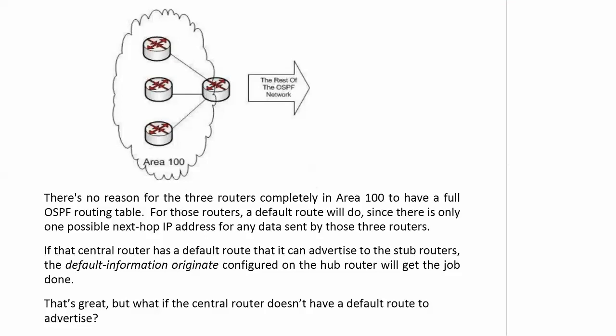If that central router has a default route it can advertise to the stub routers, that's fantastic. We can make that happen with the default information originate command. What if the central router doesn't have a default route to advertise? We actually have another way to handle that with default information originate, and we'll talk about that on the very next video.